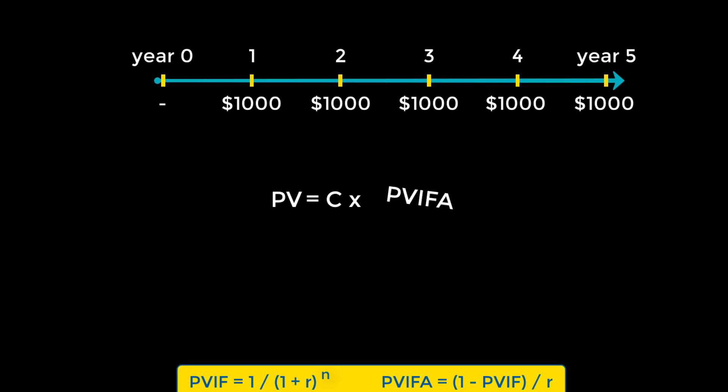If we ever need to solve for C, all we need to do is rearrange the formula to isolate it, like so. However, if either the rate or the number of periods are missing, we'll need to resort to trial and error mathematics or using a financial calculator.